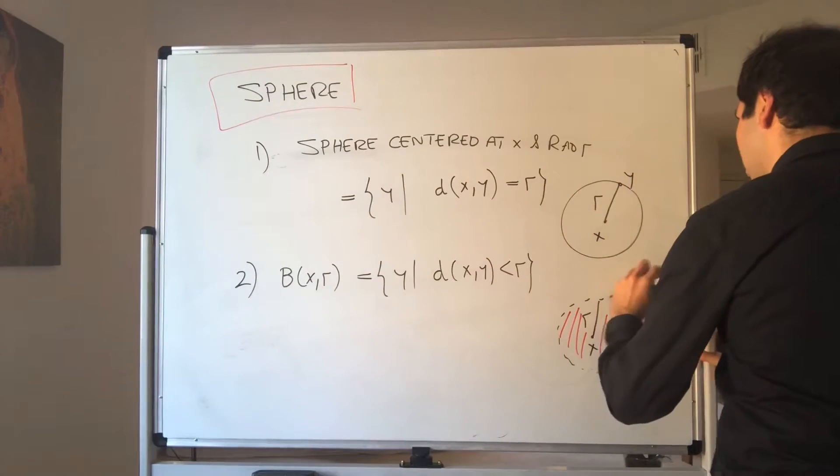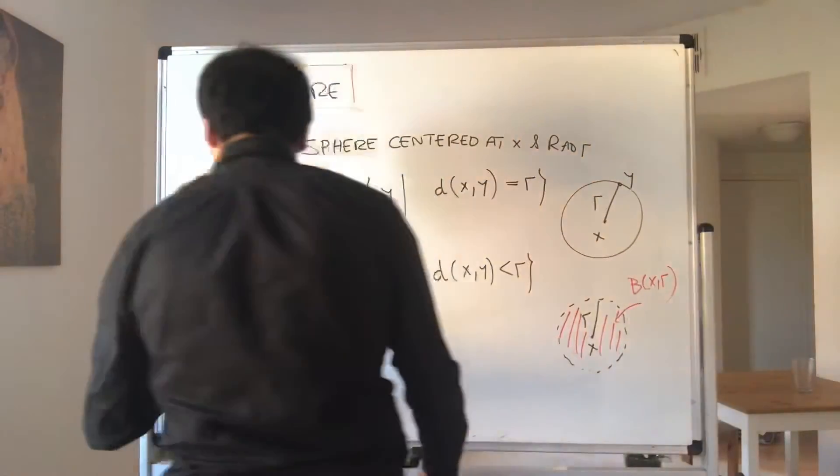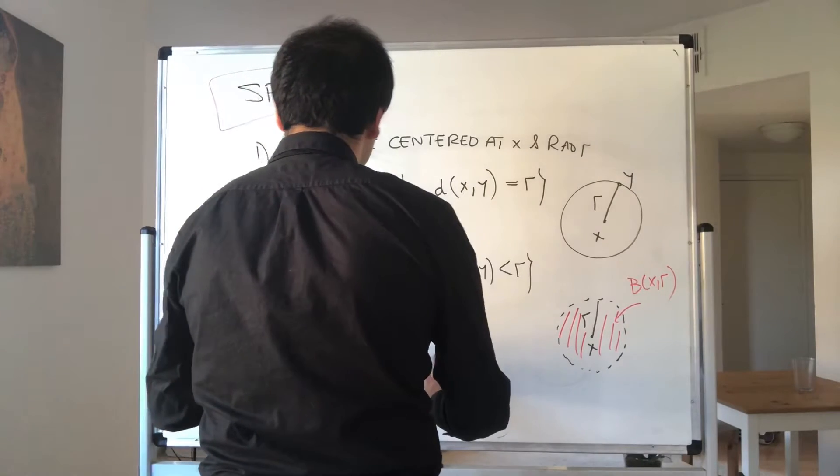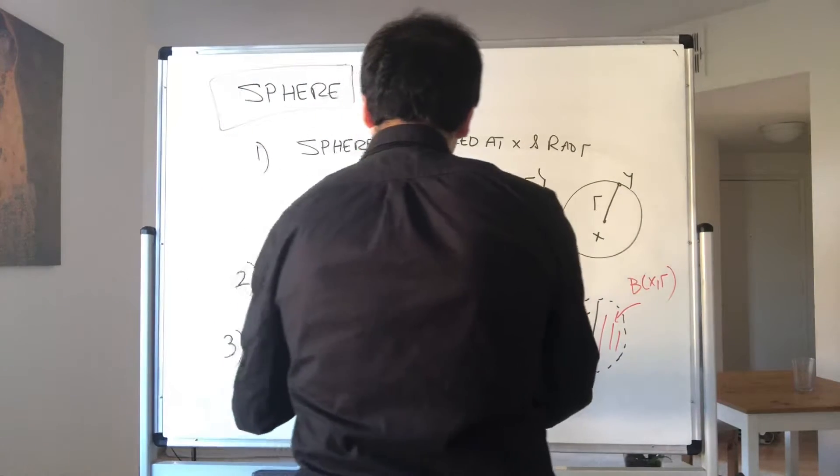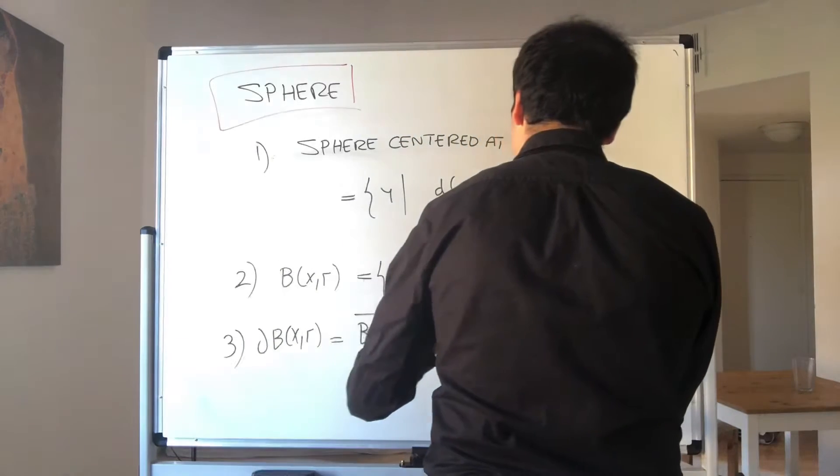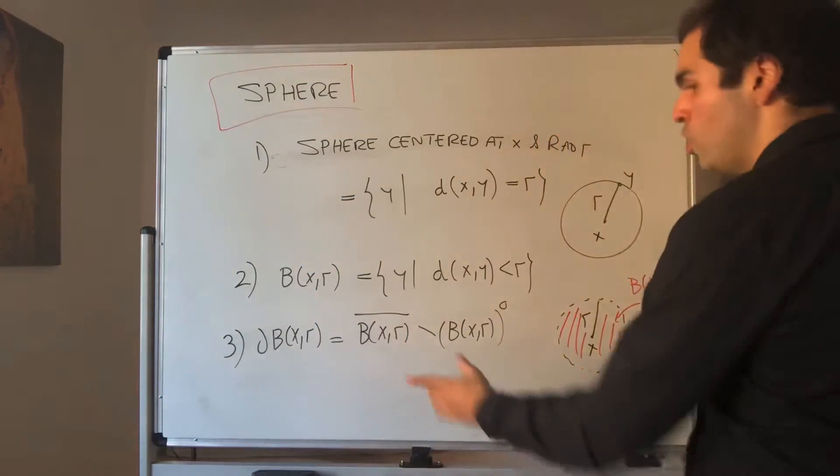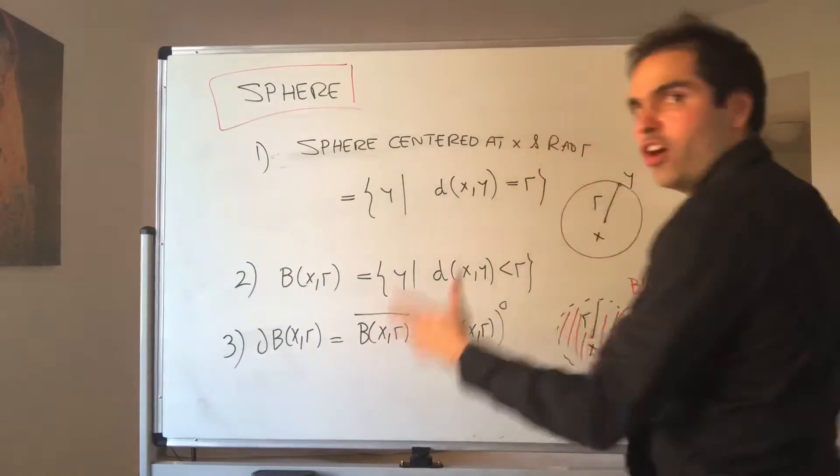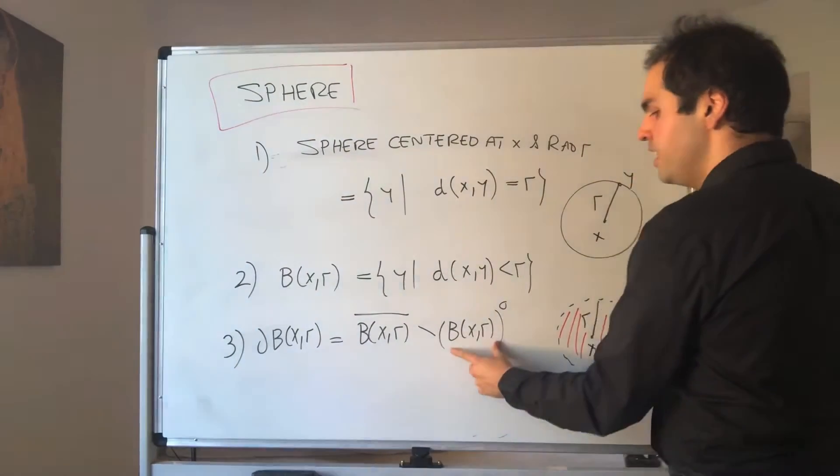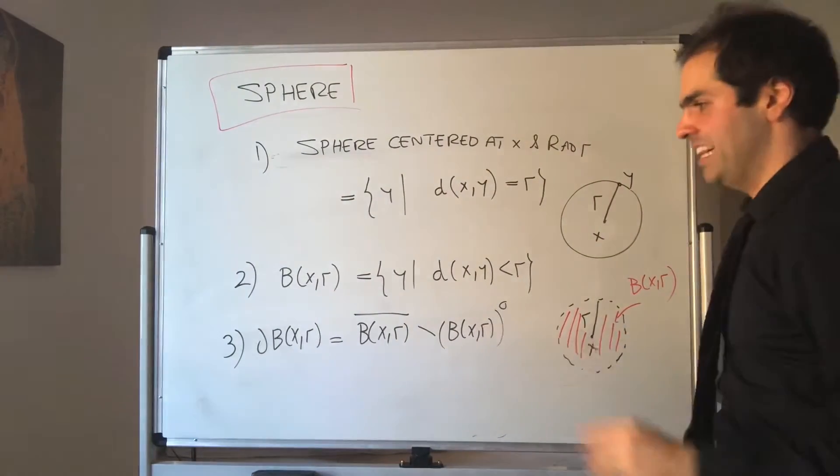So this is B(x,r). And lastly, what is the boundary? It's the difference, it's like the metric space boundary. In other words, it's the difference between the closure of B(x,r) and the interior of B(x,r). The closure is the set of all limit points of sequences in B(x,r), the interior is the set of all points which have neighborhoods in B(x,r).